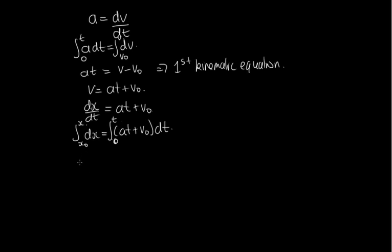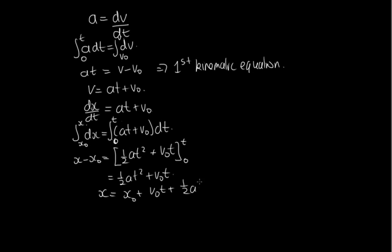When we integrate this side, we get x minus x₀. When we integrate the other side, we've got 1/2·at² plus v₀t, evaluated at time t and time 0. At time 0, both terms disappear. So this equals 1/2·at² plus v₀t. This tells us that x equals x₀ plus v₀t plus 1/2·at².